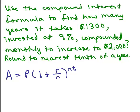Use the compound interest formula to find how many years it takes $1,300 invested at 9% compounded monthly to increase to $2,000. So if you put $1,300 in a bank and the interest rate is 9% compounded monthly, which means 12 times a year, when is the value in that account at $2,000?